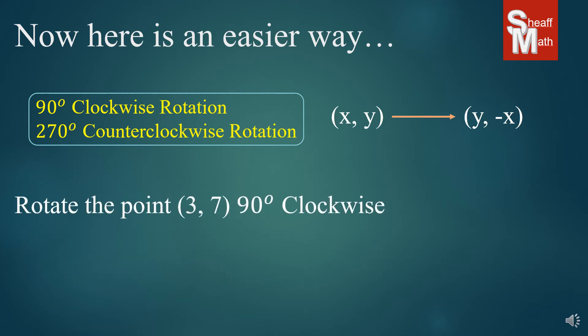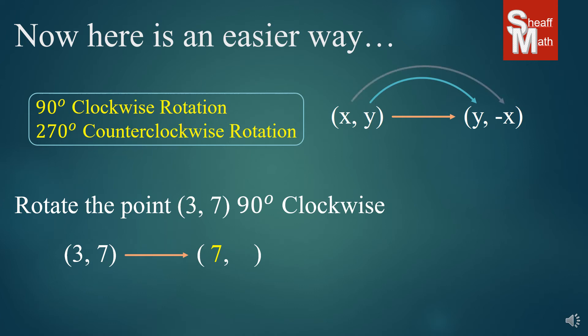Let's take a look at this problem. It says to rotate the point (3, 7) 90 degrees clockwise. Up top we have the 90 degree clockwise rotation rule: xy goes to (y, negative x). So we're trying to find what (3, 7) rotates into. The y — our 7 — goes to the first position of the new point. And the x goes to the second position and turns opposite, so 3 becomes negative 3. Not too bad.